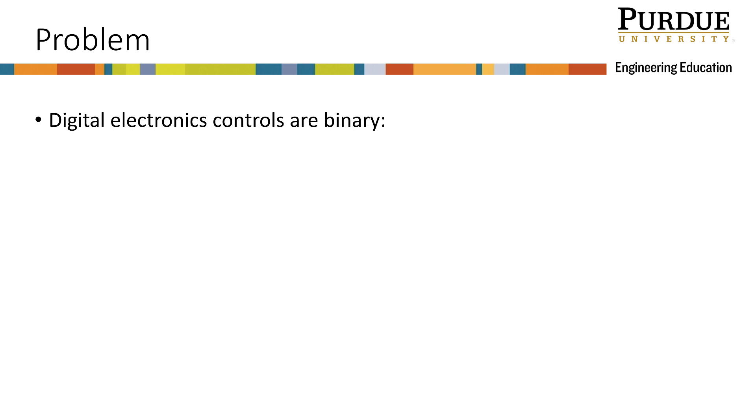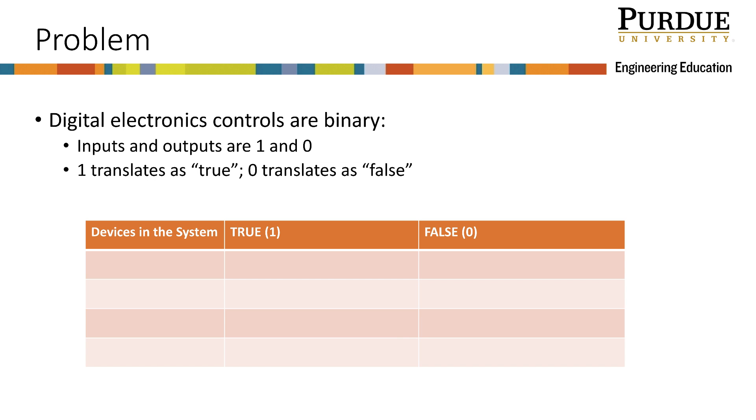First, we need to consider each device and how they work in a digital system. Digital electronics controls use binary numbering systems to operate, meaning that they take inputs of 1 and 0, which usually translate to true and false, and they output 1 or 0. Let's consider each device and its controls.